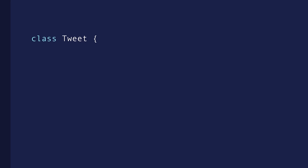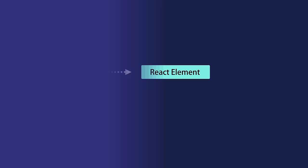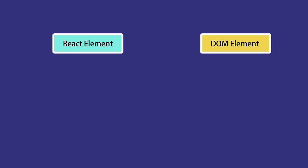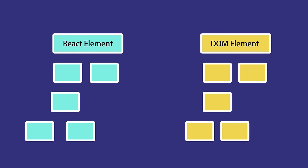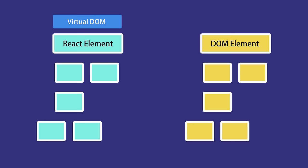In terms of implementation, a component is typically implemented as a JavaScript class that has some state and a render method. The state is the data we want to display when the component is rendered. The render method is responsible for describing what the UI should look like. Its output is a React element — a plain JavaScript object that maps to a DOM element. React keeps a lightweight representation of the DOM in memory, which we refer to as the virtual DOM.